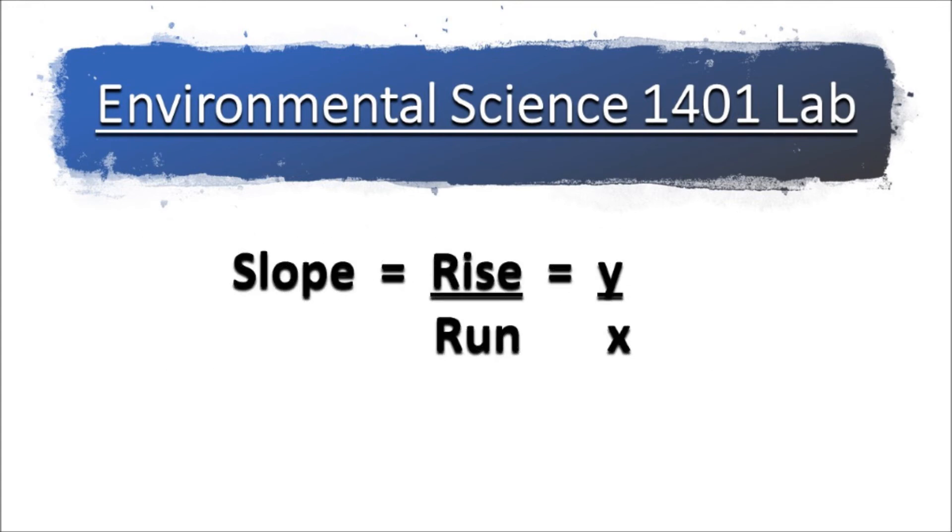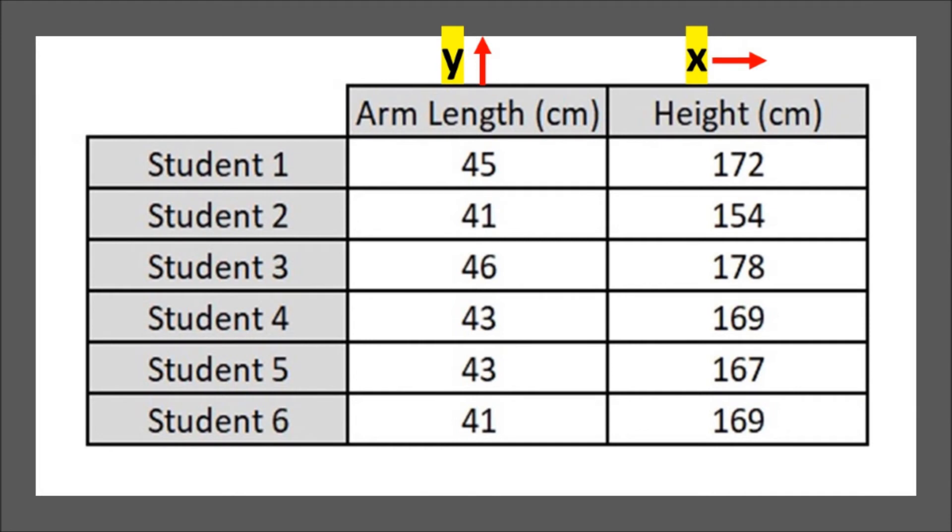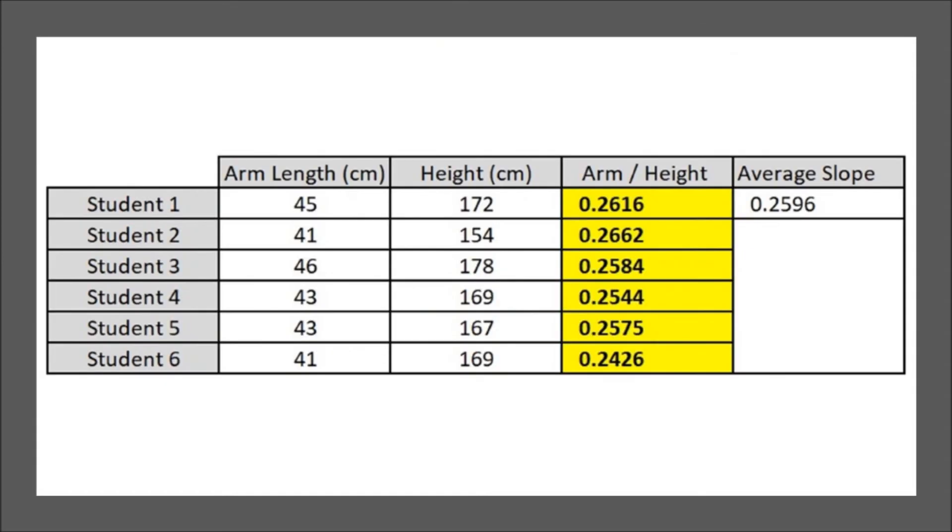What we're going to do is simply get the slope of each point. We have y divided by x. Going back to our original data, the arm length is y, the height is x, and we divide y by x. Here, as you can see in the highlighted portion, is what we get for our slope. Most of those slopes are pretty close together in value.